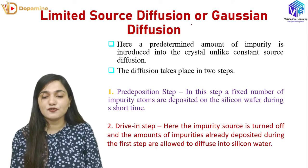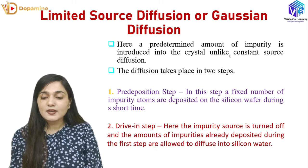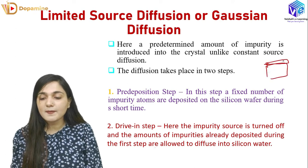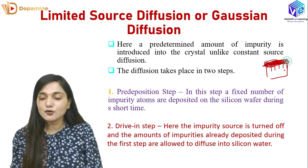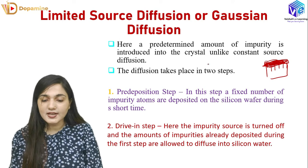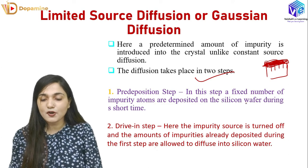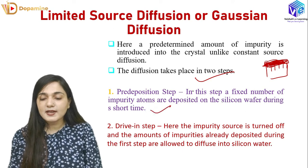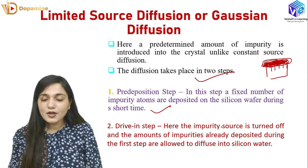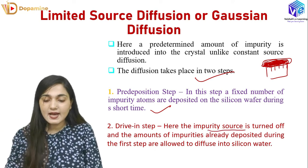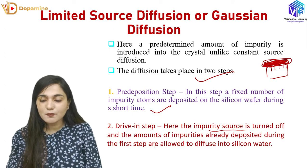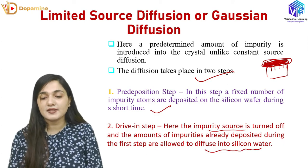Now we come to limited source diffusion, also called Gaussian diffusion. Here, a pre-determined amount of impurity is introduced and then left to diffuse. This diffusion has two process steps. First is the pre-deposition step, where a fixed number of impurity atoms are deposited on the silicon wafer during a short time. After that comes the drive-in step: we turn off the impurity source and increase the temperature so the already-deposited impurity diffuses into the silicon wafer with the help of heat.